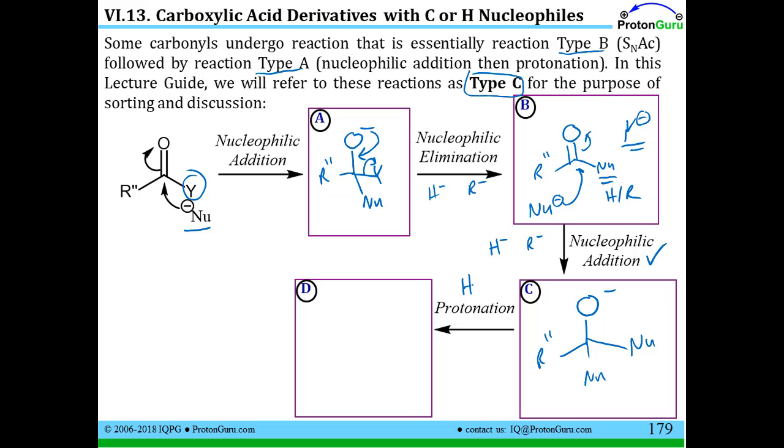We add some proton source, could be water, protonate this. And after the whole thing is said and done, the net result is we've added two nucleophiles. In place of the leaving group, that bond is gone. And the pi bond, so two bonds needed to be made up for the carbon, and we made those up by adding two nucleophiles.